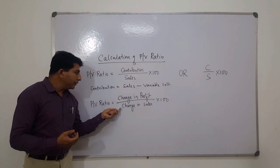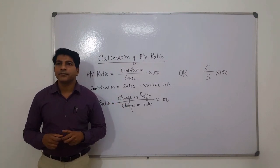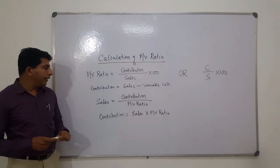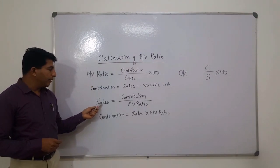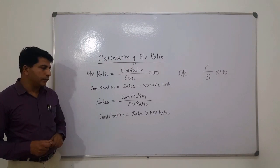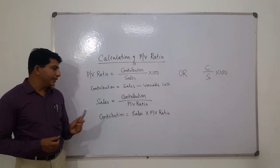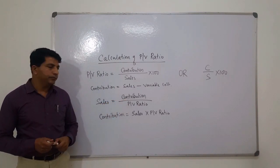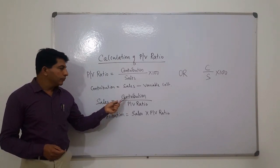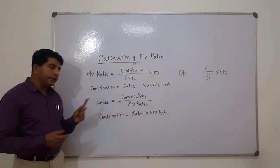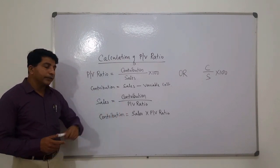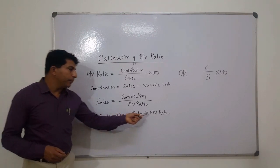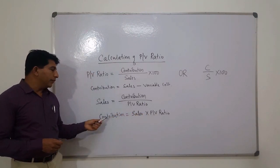With the help of PV ratio, we can calculate sales and contribution. Sales is equal to contribution divided by PV ratio — if you divide contribution by PV ratio, you will get sales. To calculate contribution, multiply sales by PV ratio and you will get the contribution.